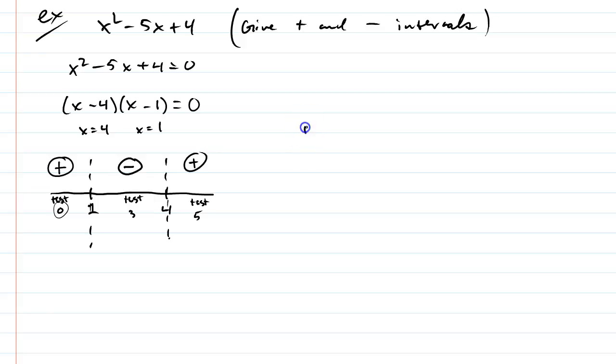So, just with the line test, we can say, when is this function positive? Well, we know it's from negative infinity to 1. That's this region over here. And, it's from 4 to infinity. That's this region on the right side. When is the function negative? Well, it's 1 through 4. And keep in mind, we're not actually including 1 or 4 because we wanted strictly positive or strictly negative.